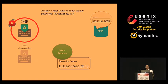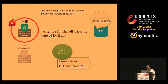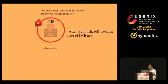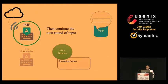After the user finishes the input session, since it is deemed sensitive, IBOX first commits all the input to the client app so it receives the full user input. Then IBOX performs a rollback of the IME app's state, erasing any input stored or transferred by the IME app — just as if the IME app never saw the user's input. IBOX then restores the network and IPC connections, and the IME app can process the next input session without IBOX isolation.